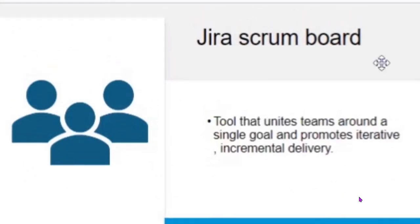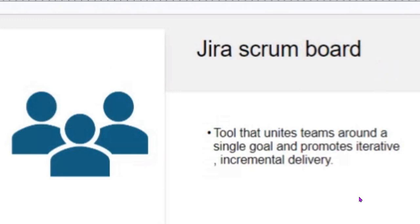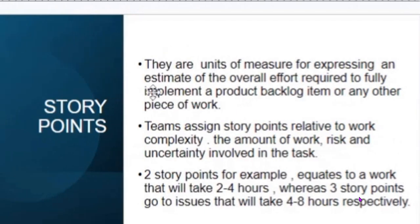We have the Jira Scrum Board, which is a tool that unites the team around a single goal and promotes iterative, incremental delivery. We also have story points. Story points are units of measure expressing an estimate of the overall effort required to fully implement a product backlog item or any other piece of work. Teams assign story points relative to work complexity, the amount of work, risk, and uncertainty involved. For example, two story points equates to work that will take two to four hours to complete, whereas three story points go to issues that will take four to eight hours.